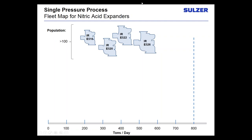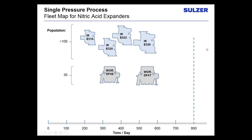For the nitric acid plants and all the machines we've seen from those plants, we've put together a pictogram showing the population breakdown for the different types of expanders. The IR expander is the most popular one we see. There are four different frame sizes within this classification, ranging from the E516, the smallest, all the way up to the E526, the largest. Together they form this family of E-series expanders, with a population somewhere north of 100.